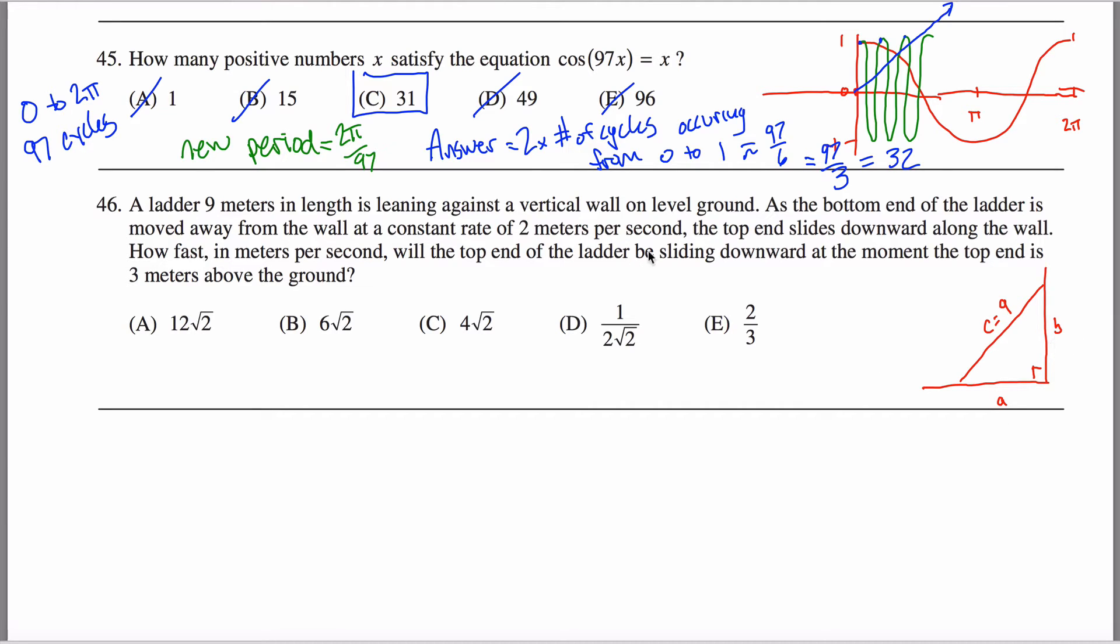You can't plug in values for A and B. And you read through this and you're like, wait a minute, the top end slides downward. How fast? At the moment, the top end is three meters above the ground. It looks like they're telling me B equals three. Can I just make this a three also? No. Don't make this a three right here because A and B are changing as the problem goes along. C is not. The ladder is always the same length.